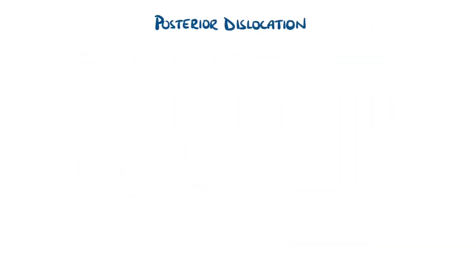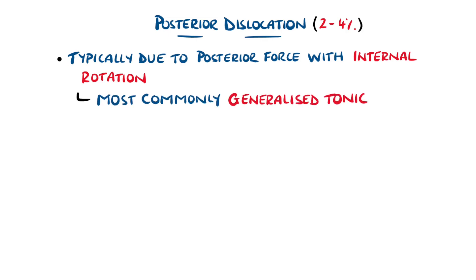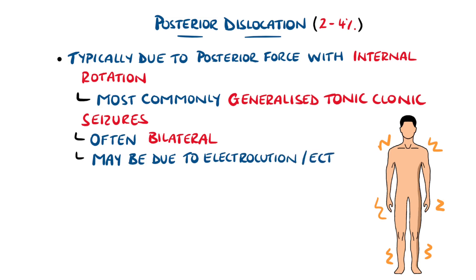Posterior dislocations make up only two to four percent of all shoulder dislocations, and occur due to the head of the humerus being forced posteriorly while in internal rotation. It is most commonly the result of generalised tonic-clonic seizures, and can often be present in both shoulders. It can also be due to electrocution, including electroconvulsive therapy, and in traumatic cases it is mostly due to falls onto an outstretched arm.